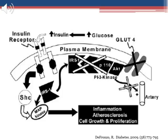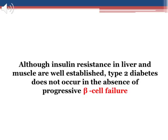The MAP kinase pathway, when stimulated, leads to activation of intracellular pathways involved in inflammation, cellular proliferation, and atherosclerosis. The block at the level of IRS-1 impairs glucose transport into the cell, and the resultant hyperglycemia stimulates insulin secretion. Because the MAP kinase pathway retains its sensitivity to insulin, this causes excessive stimulation of this pathway and activation of multiple intracellular pathways involved in inflammation and atherogenesis. This in part explains the strong association between insulin resistance and atherosclerotic cardiovascular disease in both non-diabetic and type 2 diabetic individuals. Although insulin resistance in liver and muscle are well-established, type 2 diabetes does not occur in the absence of progressive beta cell failure.